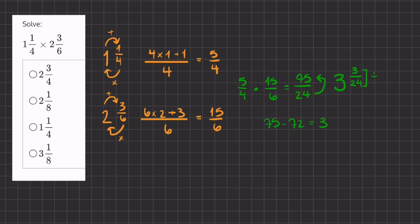We'll find a number that is equally divisible by 3 and 24, and that's 3. So our final answer is going to be 3 and 1/8.